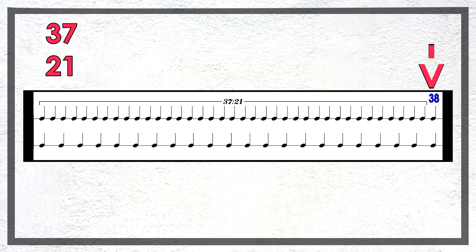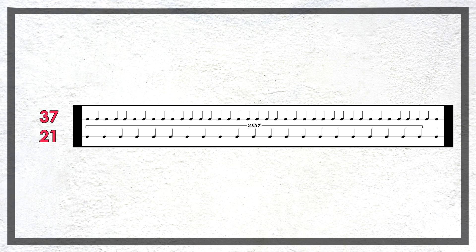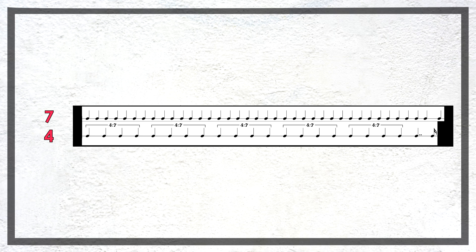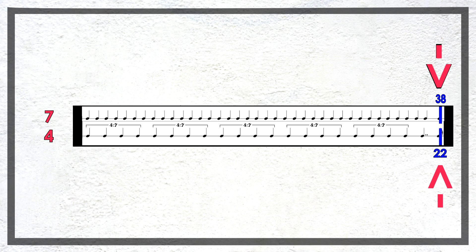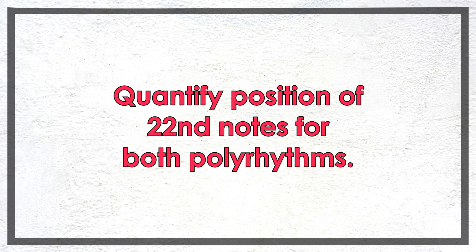Let's see just how subtle the difference between these two polyrhythms is. For a 37 against 21, we must have the 38th note of the 37 side and the 22nd note of the 21 side play at the same time. Now let's look at a series of 7 against 4 polyrhythms. If we look at the 38th note of the 7 side and the 22nd note of the 4 side, we can see that they do not line up. But let's see if we can speed up or slow down one of these rhythms so these notes line up. Let's say the 37 side is playing with the metronome; then we'll fix that side and either speed up or slow down the 21 side. We're going to quantify the position of the 22nd note for both polyrhythms in terms of how many beats of the original tempo have passed.